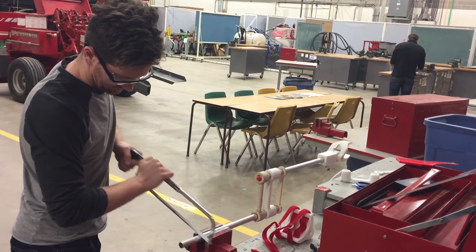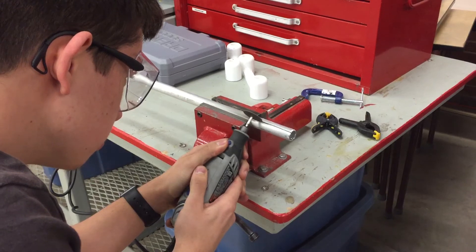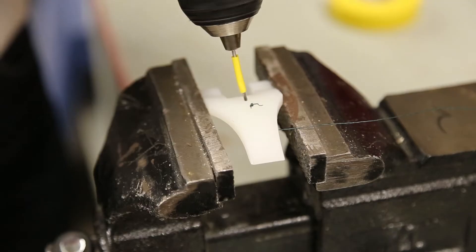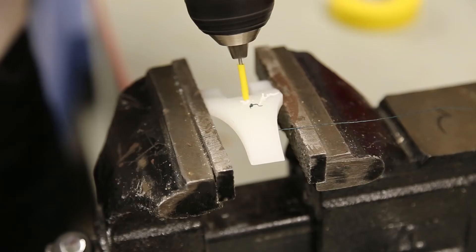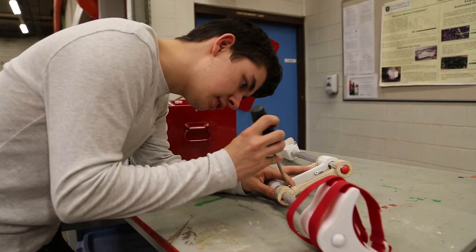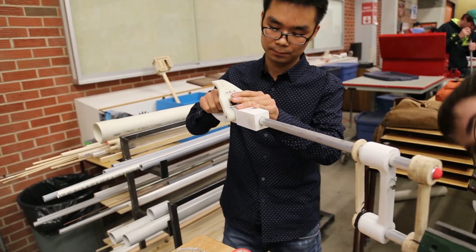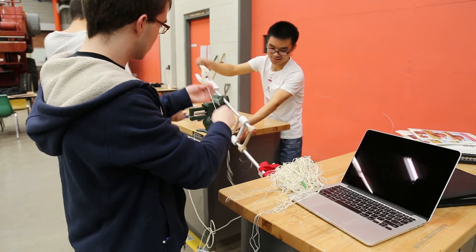Indeed, it seemed that no matter what we would do, any string we used would eventually just fray and snap. We attempted using several types of nylon wires and even metal wires, but each time it would either snap or stretch too much to provide any decent claw strength. As it turned out, we were never even close to exceeding the string's tensile strengths, but instead there were enough rough surfaces inside our parts that the strings would quickly fray.